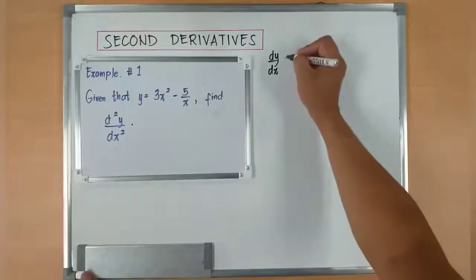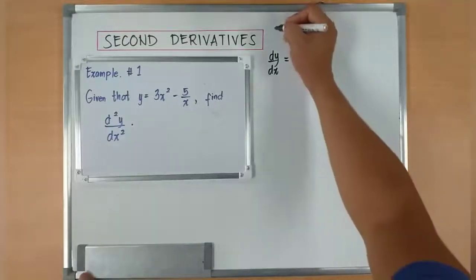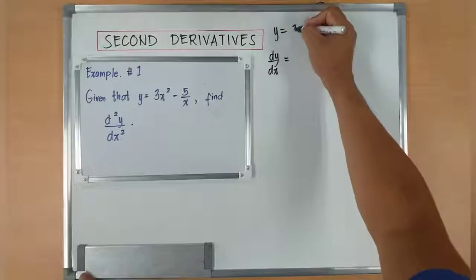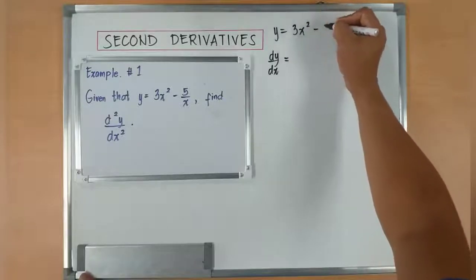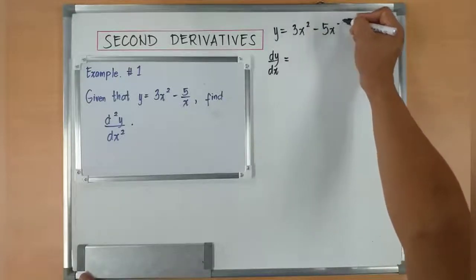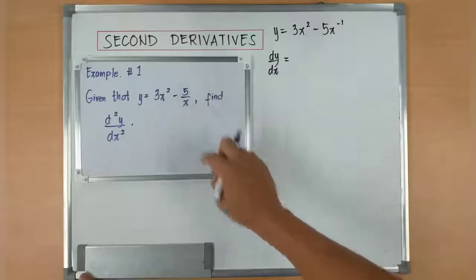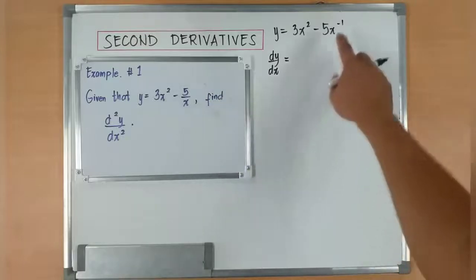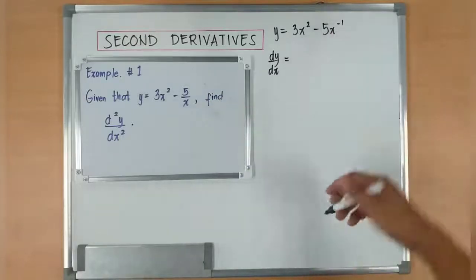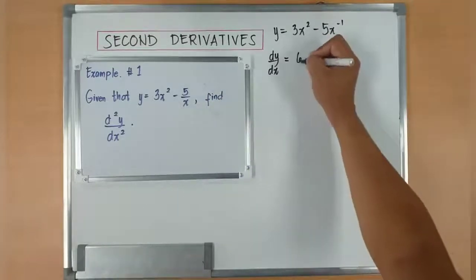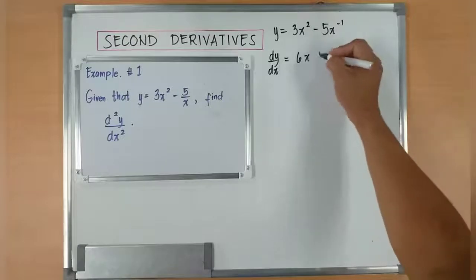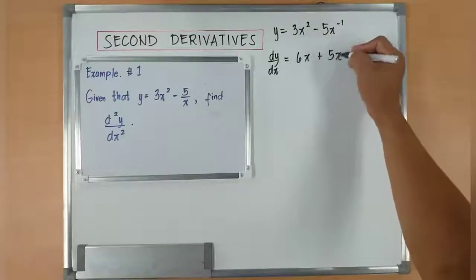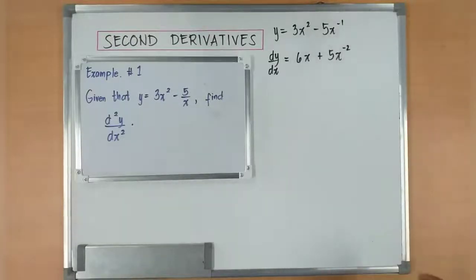Dy over dx is equal to, by the way, y is equivalent to 3x squared minus 5x to the power of negative 1. Remember, you have a denominator variable x. Move it up. It will become x to the power of negative 1. So it will become 6x plus 5x to the power of negative 2. So that is the first derivative.